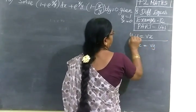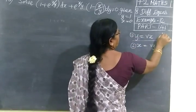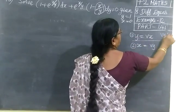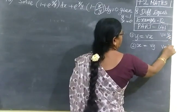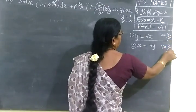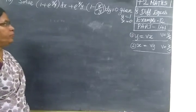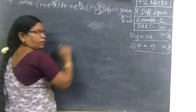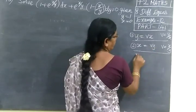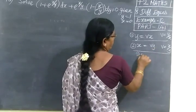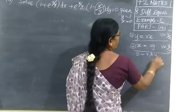This is the first type and this is the second type. This can be written as v equal to y by x. Here v equal to x by y. Now according to our problem, here you are taking x by y, so you take x equal to vy. Now differentiate with respect to y.